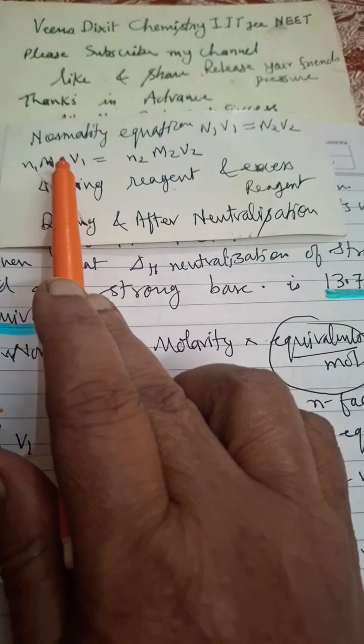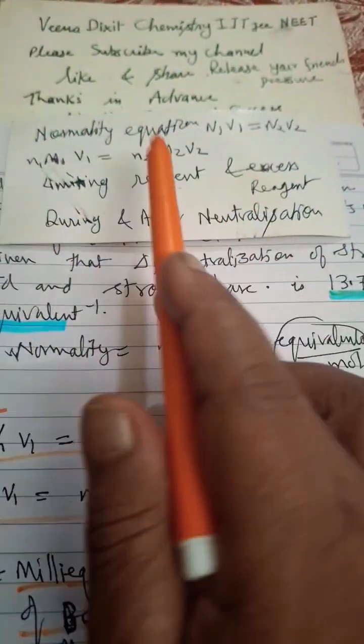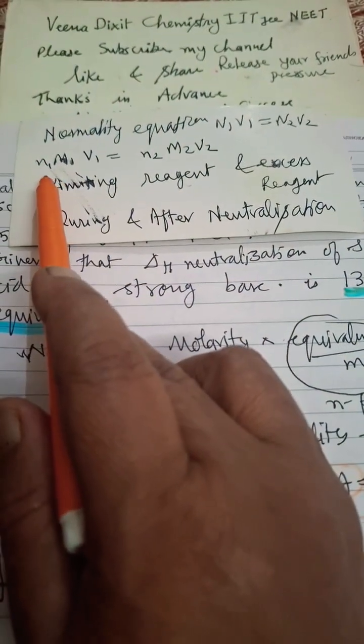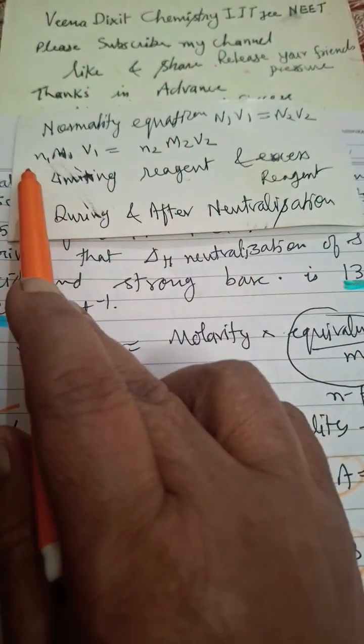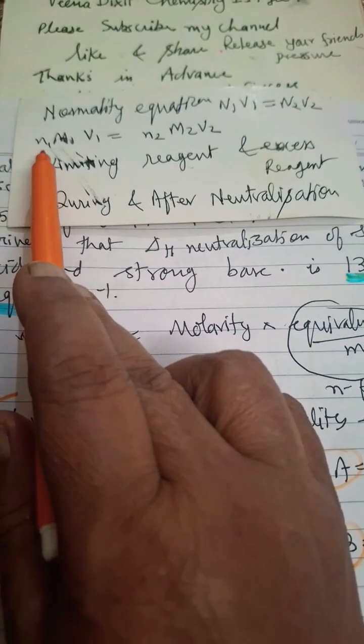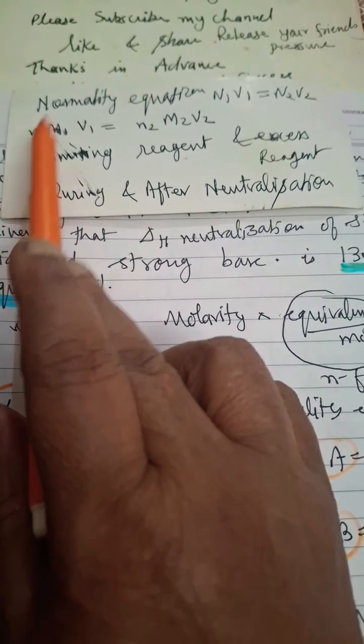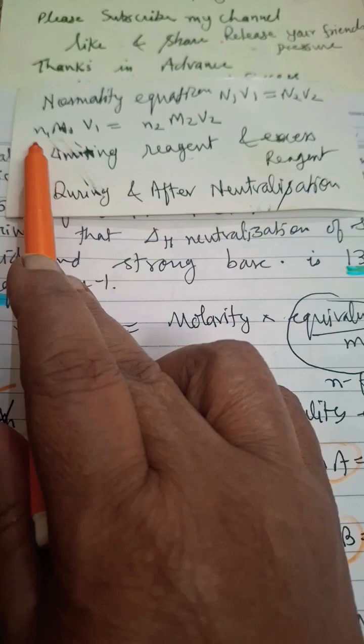But sometimes any one of them can be basic or diacidic, so here we will use formula N1M1V1 = N2M2V2. What is N1 here? It is equivalence per mole, or we can say n-factor.